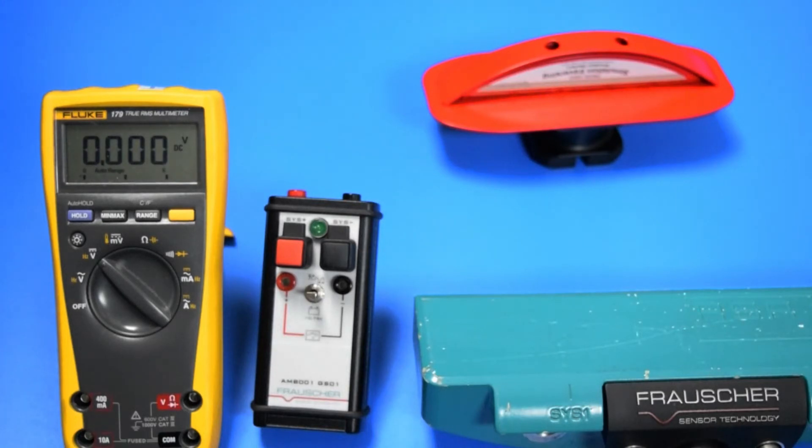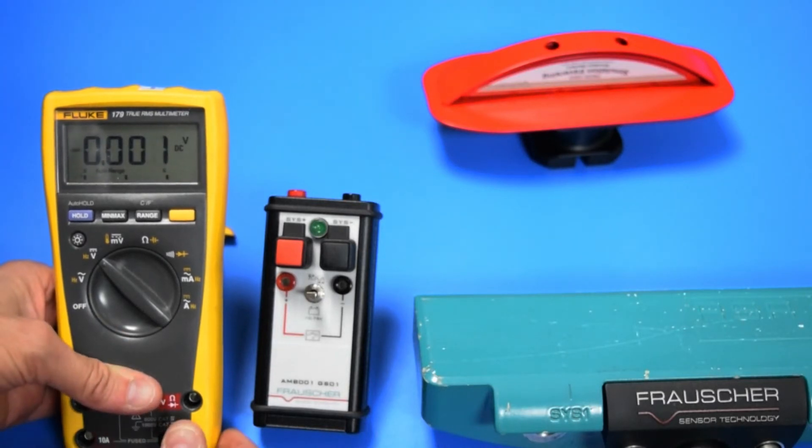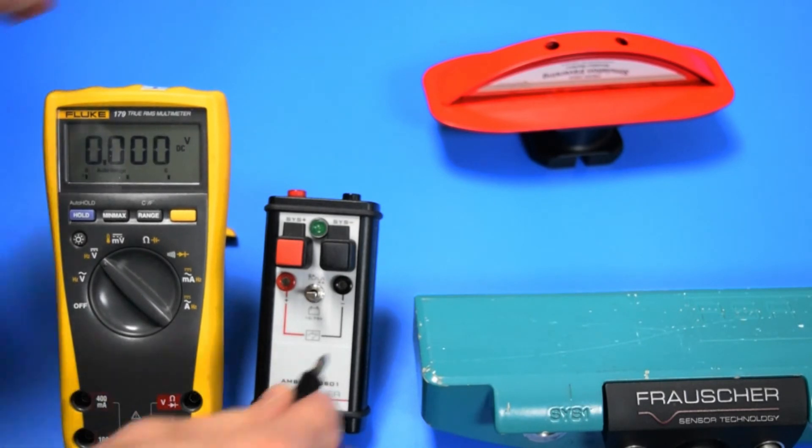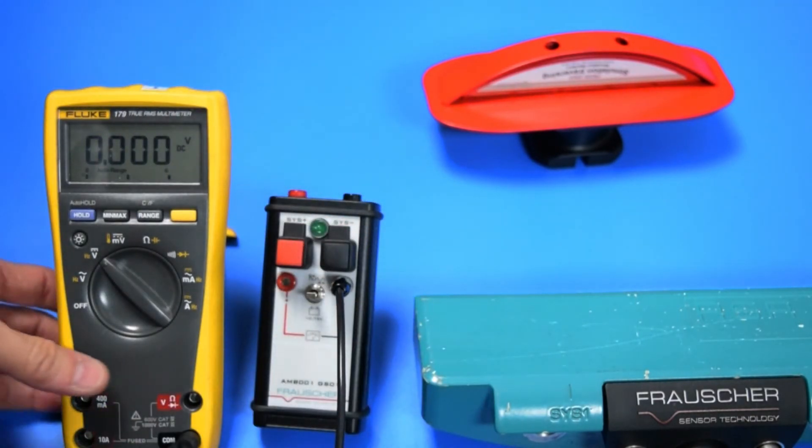First, set the voltmeter to measure DC voltage and connect the leads from the meter to the AMB as shown, negative to negative and positive to positive.